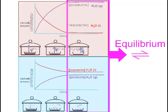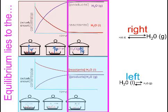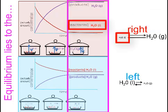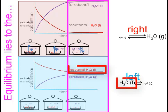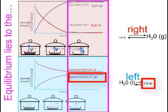Now let's compare just the parts of the graph where equilibrium has been reached. We see that the first graph refers to an equilibrium which lies to the right, meaning that once equilibrium has been reached, there are lots of products relative to reactants. And in the second situation, we have an equilibrium which lies to the left, meaning once equilibrium has been reached, there are lots of reactants relative to products.